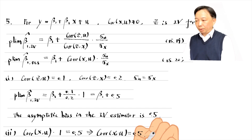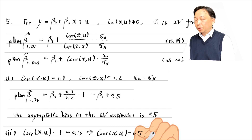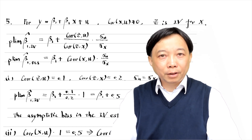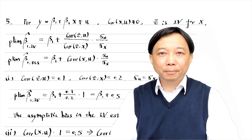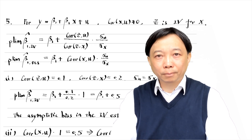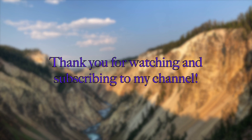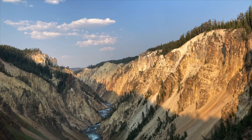This example illustrates that the two-stage least squares estimator could have more bias than the OLS estimator, even if the instrumental variable is only slightly correlated with the error term. Thank you so much for solving the problems with me. I will see you soon in the second part of the solution. Thank you for watching this video and subscribing to my YouTube channel. See you next time.